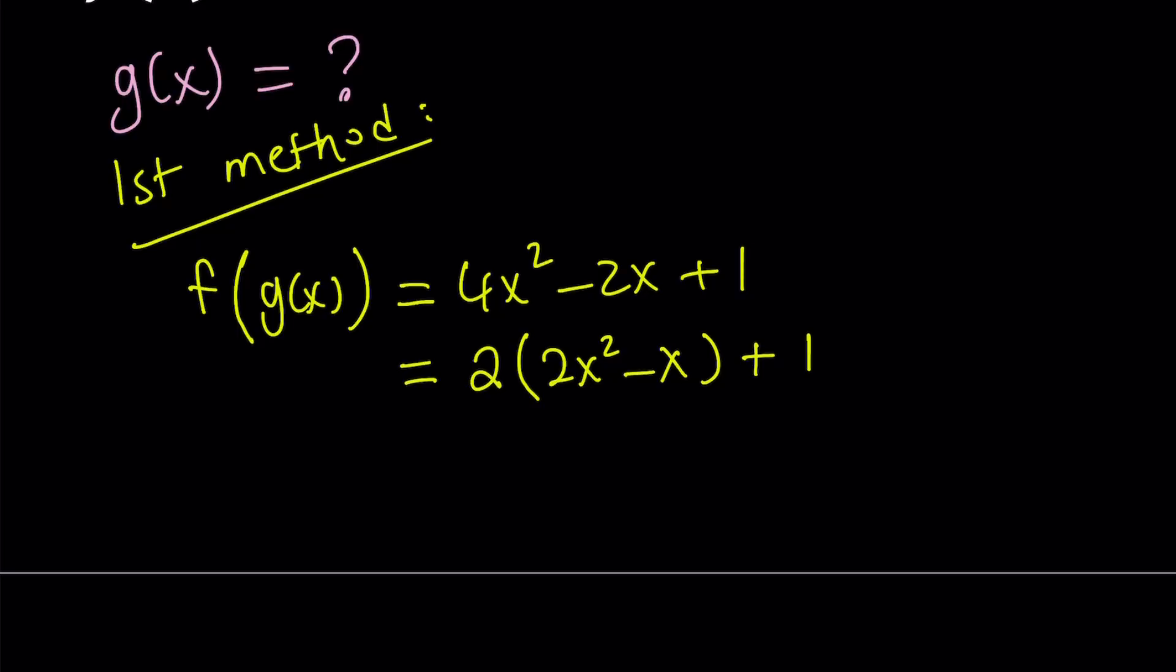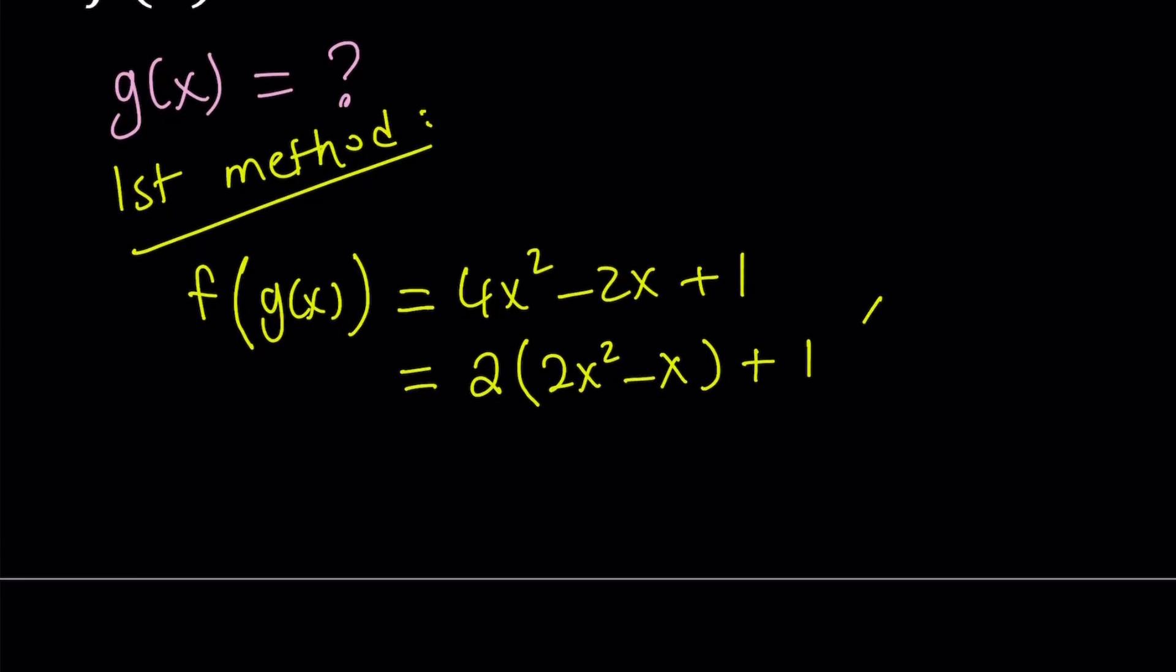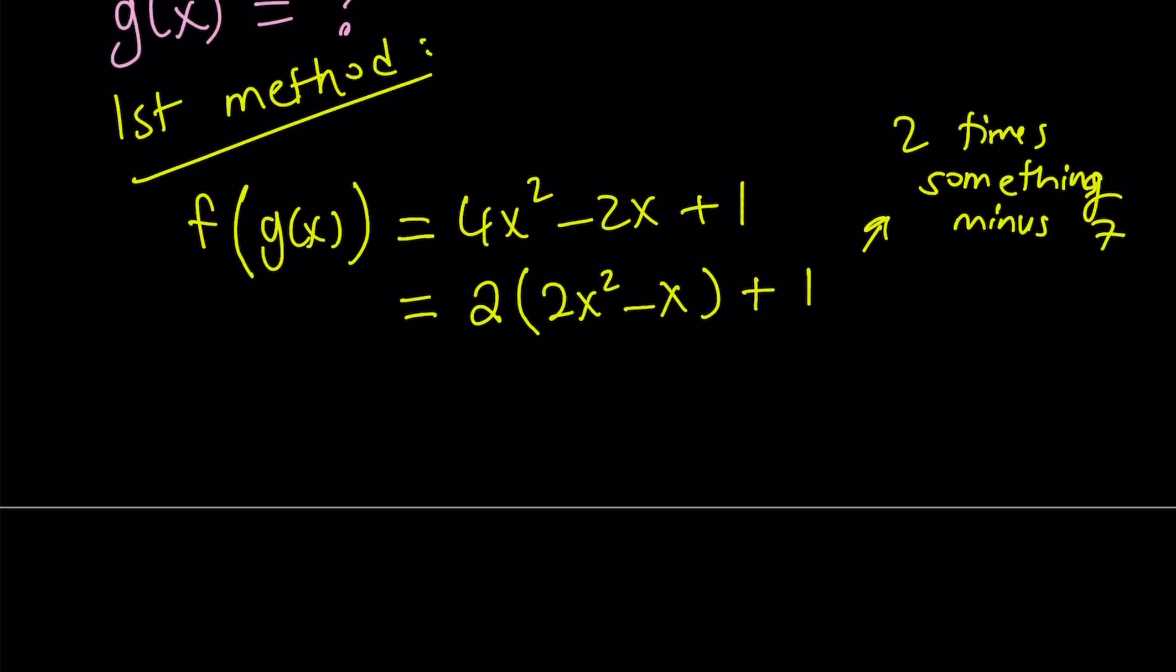So in other words, I want to get 2 times something minus 7 from here. I hope that makes sense. 2 times something minus 7. Great. So let's go ahead and try to get that. In order to get 2 times something minus 7, we can go ahead...